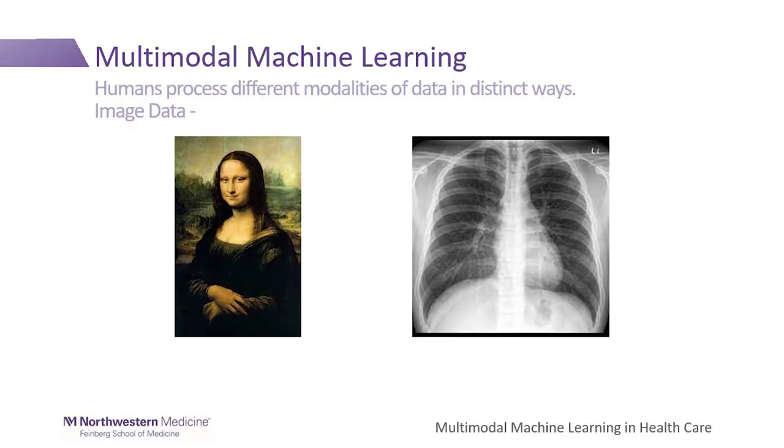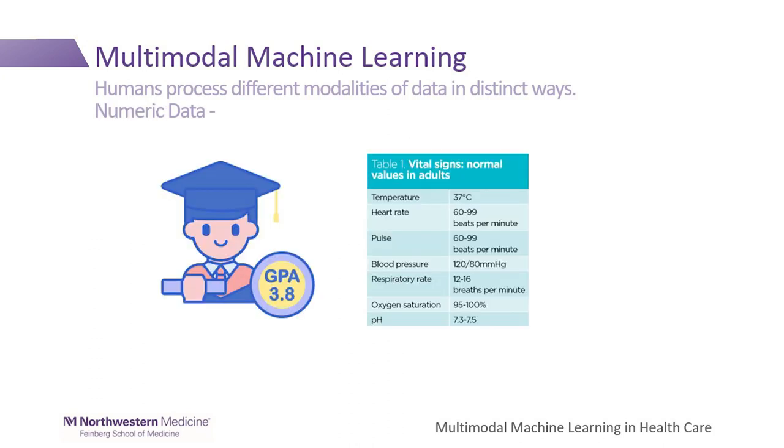But what about image data? Take the Mona Lisa — you first see that it's a lady sitting there. That's the big picture. But if you go into small details, the lady is smiling; you look into her face, her mouth. So when you process an image, it's from big picture to small details. That applies to medical images like a chest X-ray.